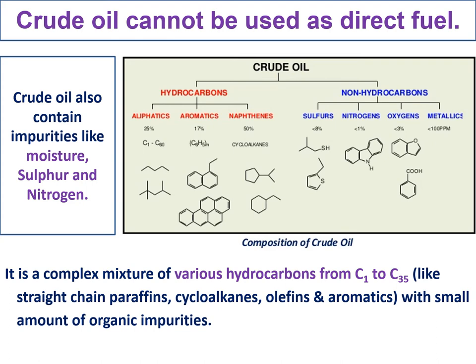Apart from impurities, crude oil is a complex mixture of various hydrocarbons — it may contain C1 to C35 long hydrocarbon chains. The nature of hydrocarbons also varies within these chains. For example, they may contain straight-chain hydrocarbons, branched hydrocarbons, cyclic hydrocarbons, and aromatic hydrocarbons — different types of hydrocarbons with different chain lengths are included in crude oil.